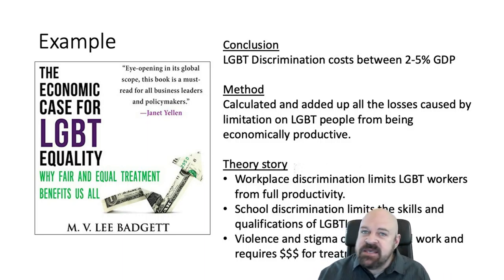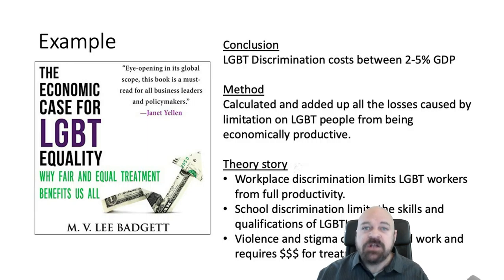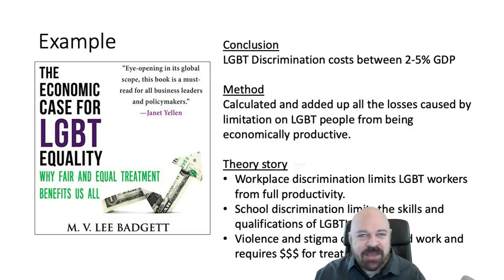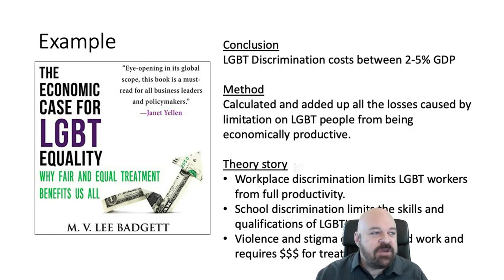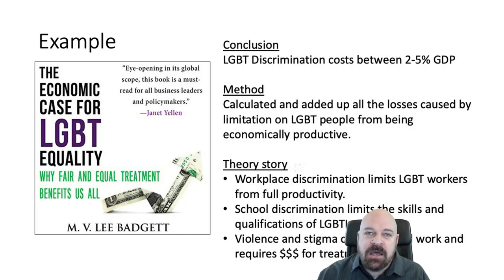It's easy to kind of explain the method. Now Lee goes into much more detail in her book, but basically the method is calculating and adding up all the losses caused by LGBT discrimination that prevent people from being economically productive.